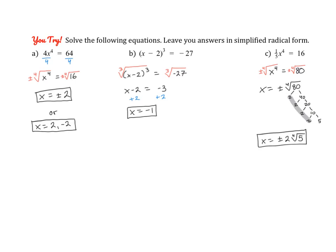Alright, go ahead and check your steps. So in the first one, you have to isolate and then take the plus or minus fourth root of both sides. So don't forget that plus or minus, because we actually have two answers, positive 2 and negative 2. And you can write your answer in either way.